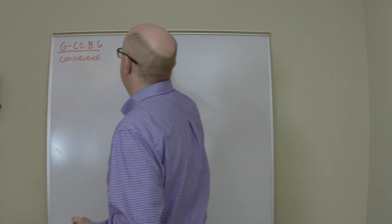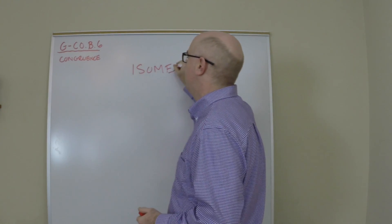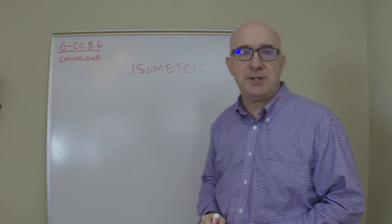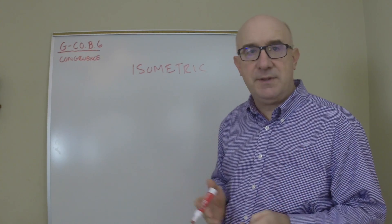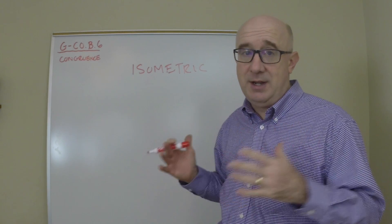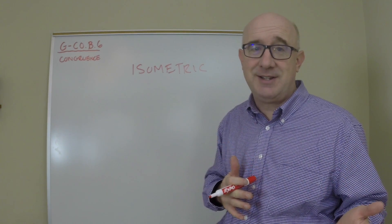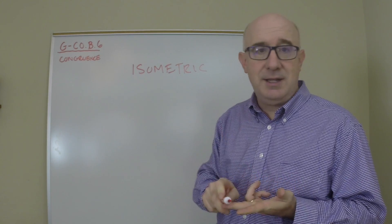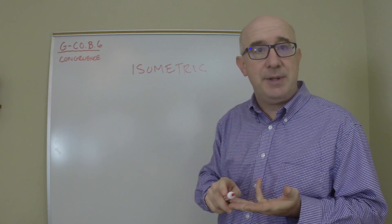Very early on we looked at this idea of isometric transformations. The whole purpose of identifying the transformations that are isometric is because when you're done with a transformation that's isometric, your angles are congruent, your sides are congruent, the shape is identical.